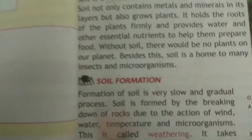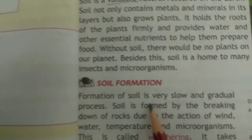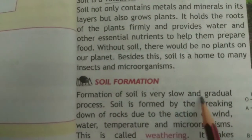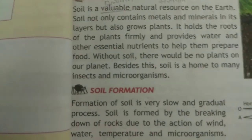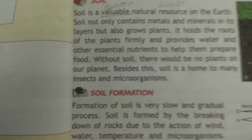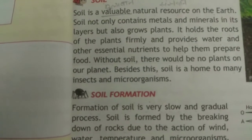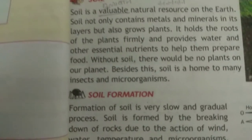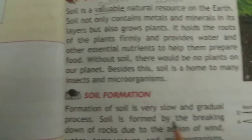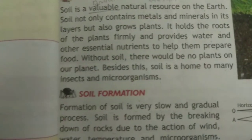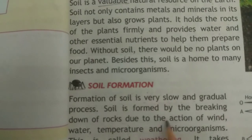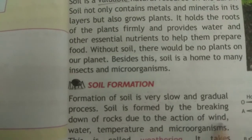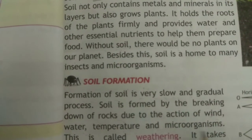Soil Formation. Formation of soil is a very slow and gradual process. Soil ka jo formation ka process hootate hai — pehle chatan, pher mitti, pher minerals ya dhul ki parat hootate hai — us ka process bhoot slow hootate hai. Soil is formed by the breaking down of rocks due to the action of wind, water, temperature and microorganisms.